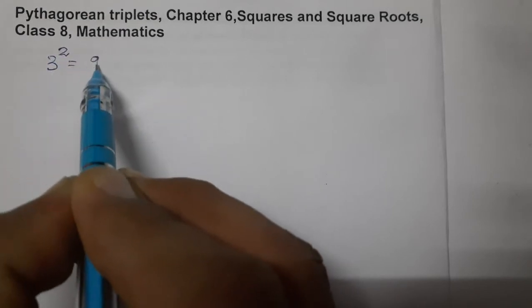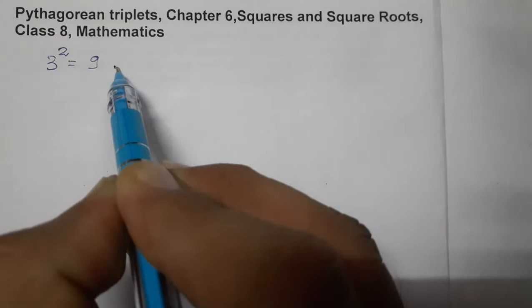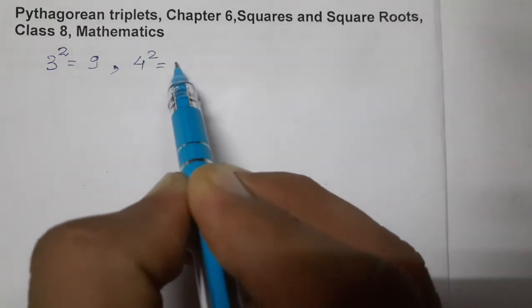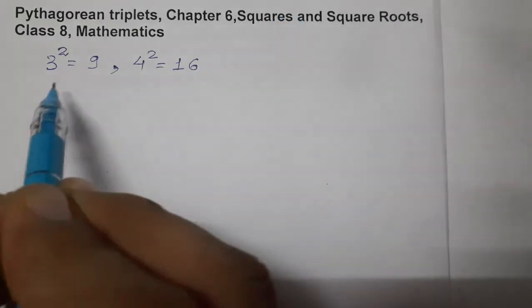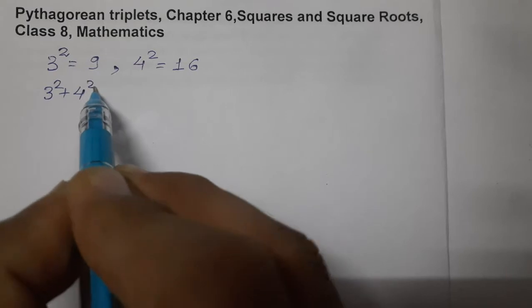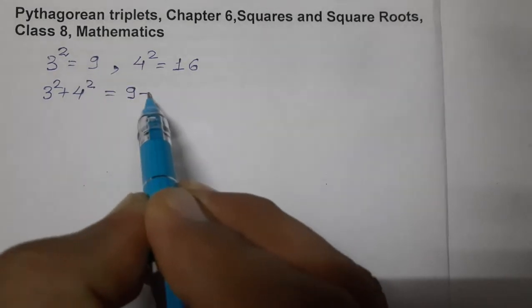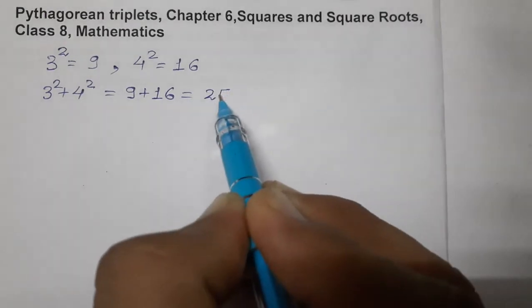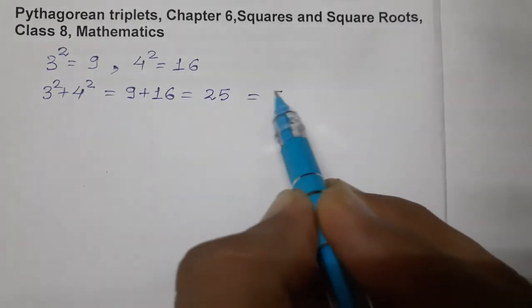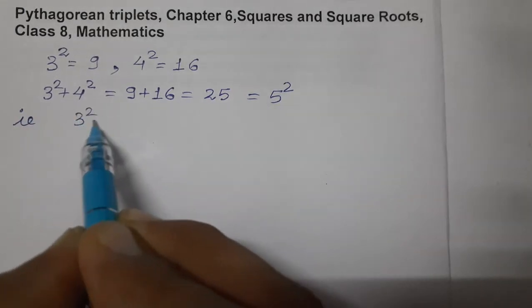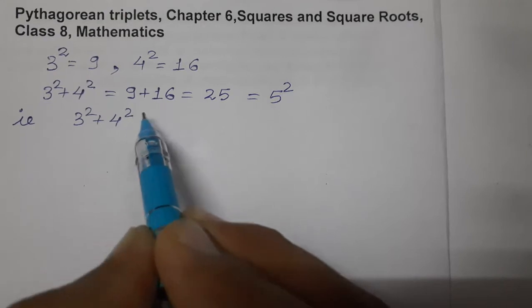Now consider the numbers 3 and let us do the square of 3. 3 square is 9. Let us take another number 4. 4 square is 16. Now let us add these two numbers, 3 square plus 4 square. Now when adding what we get, 9 plus 16 equals to 25, and 25 is the square of 5. That is what we are getting, 3 square plus 4 square equals to 5 square.